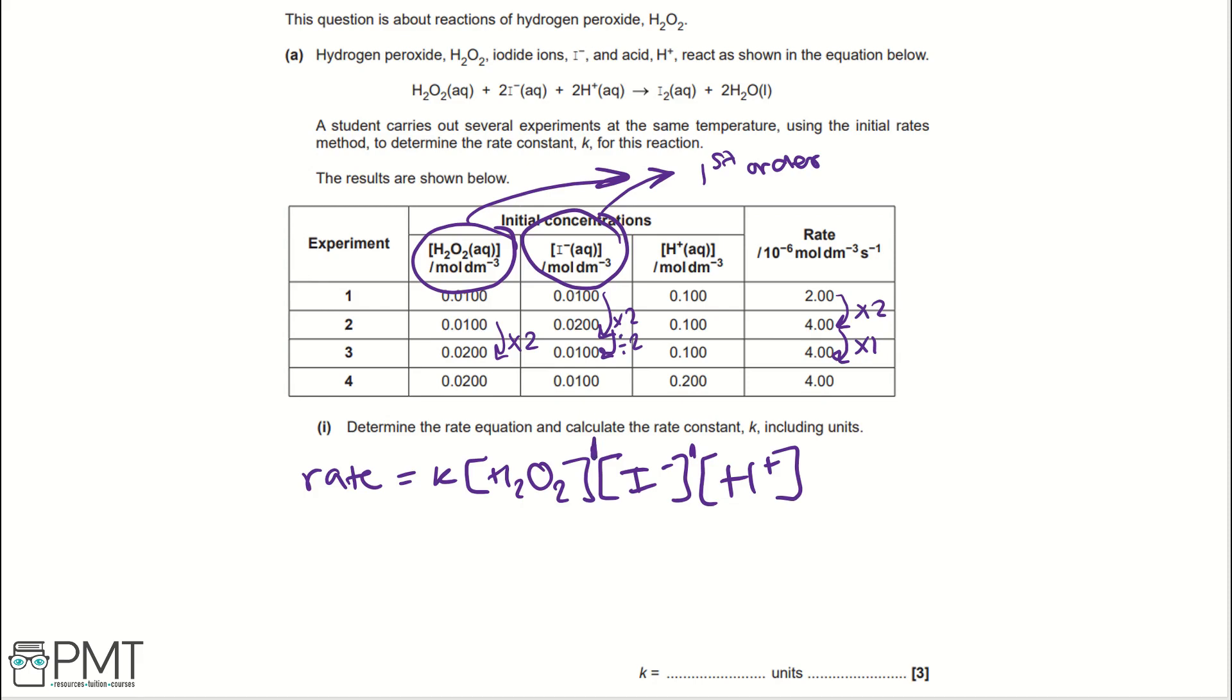If we continue, when H+ has increased by times 2 and I- and H2O2 have stayed exactly the same, the rate has not changed. And so, the order of reaction for H+ is 0 order. So, we would have a little 0. Therefore, if we write the actual rate equation, we have rate equals K H2O2 I minus. And we ignore the H+ because H+ to the power of 0 is 1.